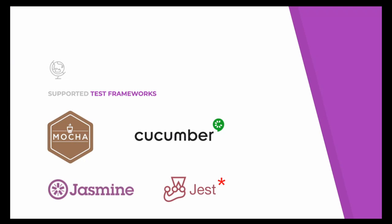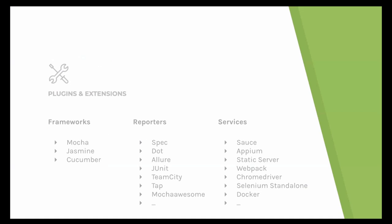Test frameworks supported with WebDriver.io are Mocha, Cucumber, Jasmine, and Jest (with an asterisk — we don't have Jest integrated itself, but tests run with Jasmine and our assertion library look like Jest tests). We also have various reporters you can use: Spec, Dot, Allure, JUnit, TeamCity, TAP, and Mocha Awesome. And we have a bunch of services that allow integration with third-party vendors like Sauce, Appium, static server, driver services, Selenium standalone server, and more. With reporters and services, you can create a test setup really individually suited for your needs.